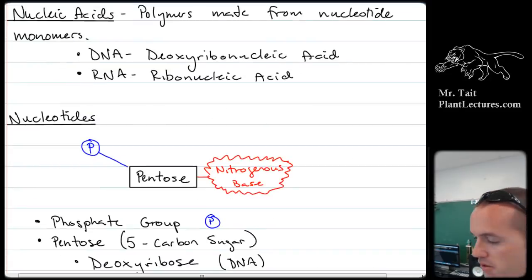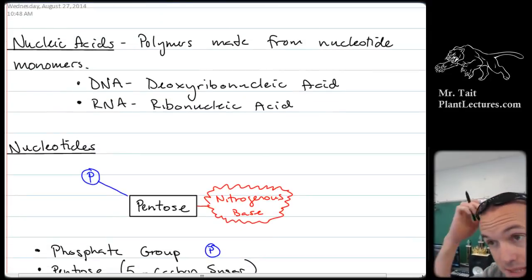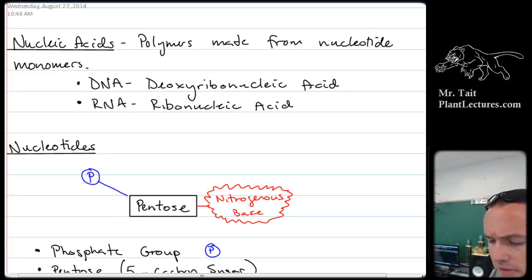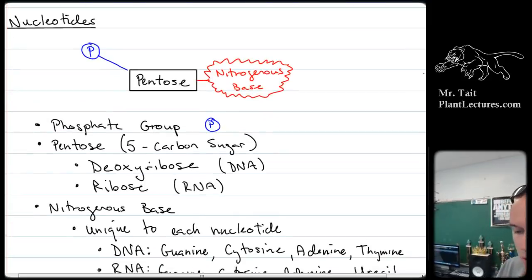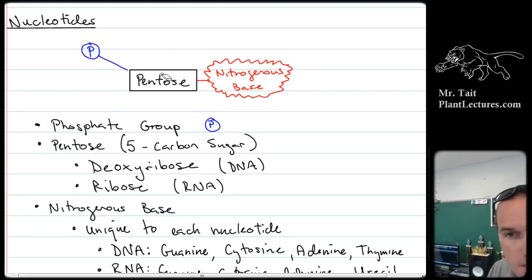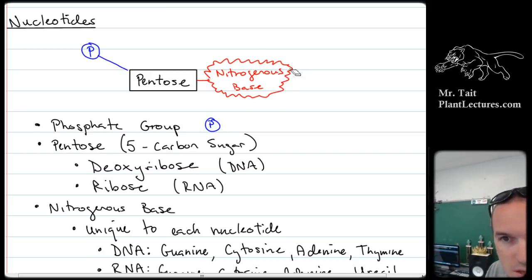We're going to talk about nucleic acids. There are two types of nucleic acids, DNA and RNA, and they differ based on the sugar they have. DNA has deoxyribose, and RNA has ribose. They all have a phosphate group bonded to a pentose — a five-carbon sugar — and they all have a nitrogenous base. The nitrogenous bases are A, C, G, T, and U. That's where they get their differences from.